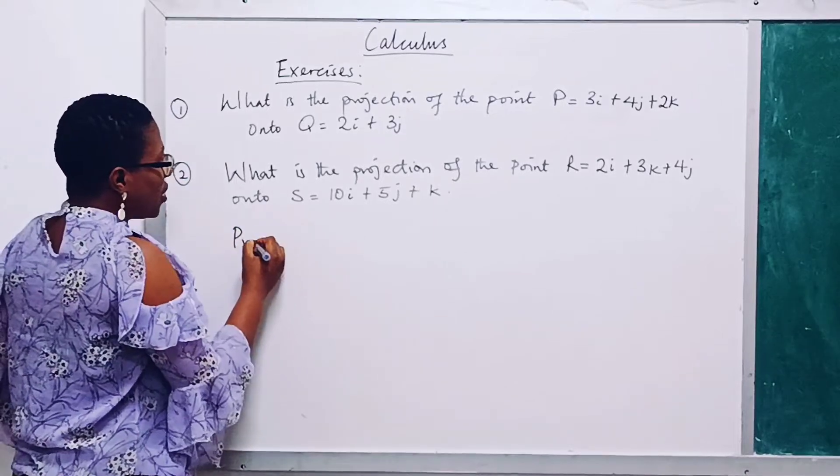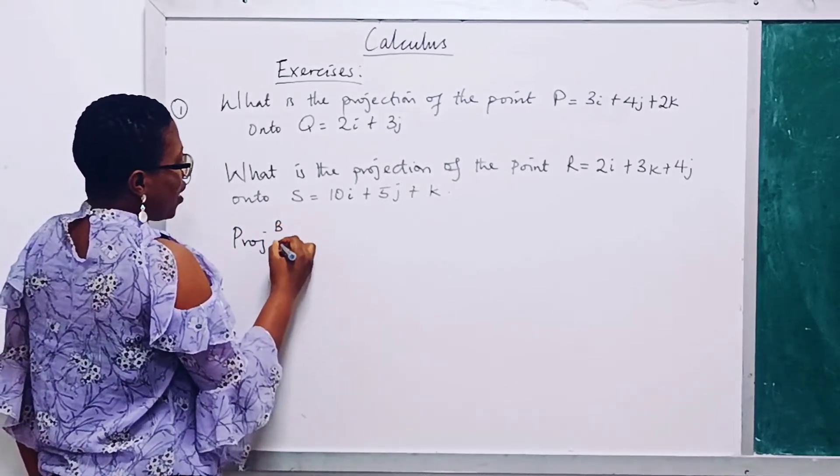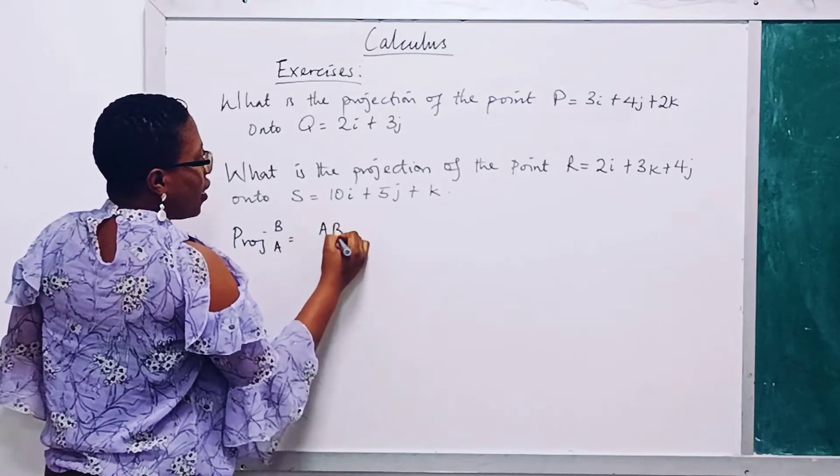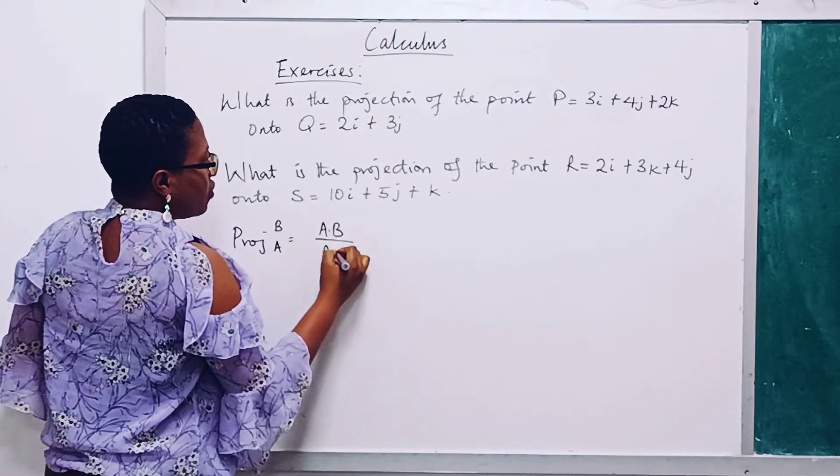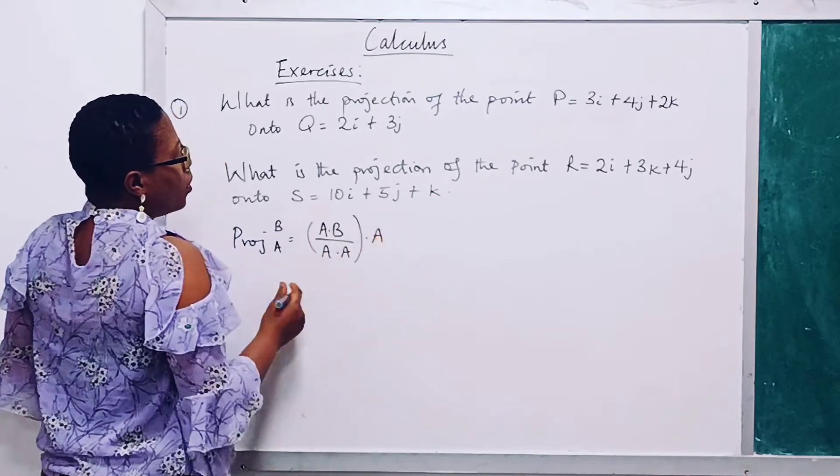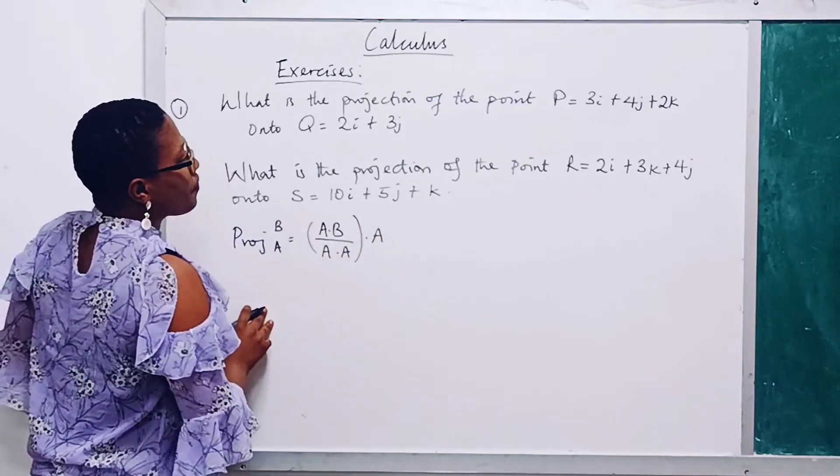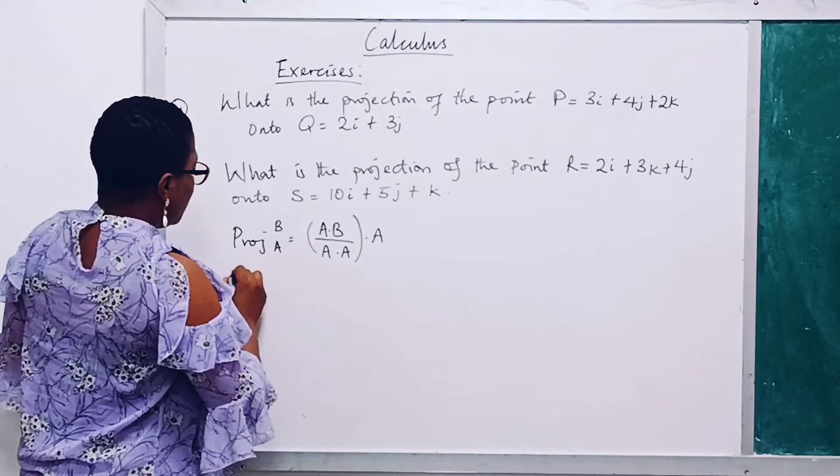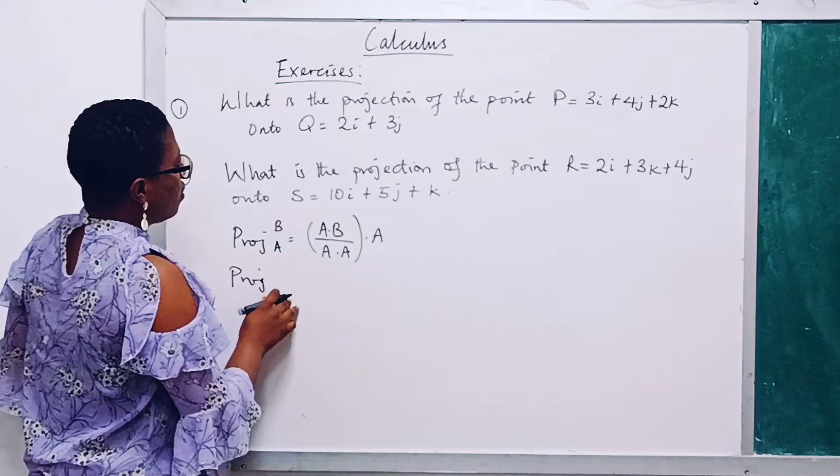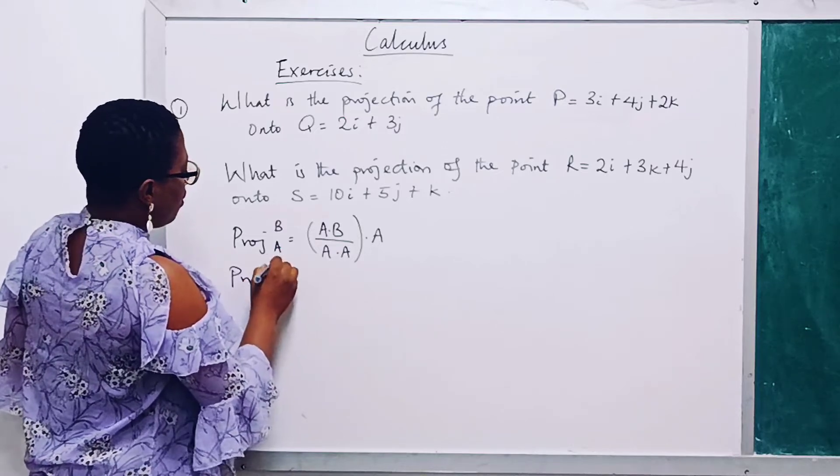So this will have a projection of B onto A to be equal to A dot B over A dot A dot A. We are going to now have a projection of B on Q.